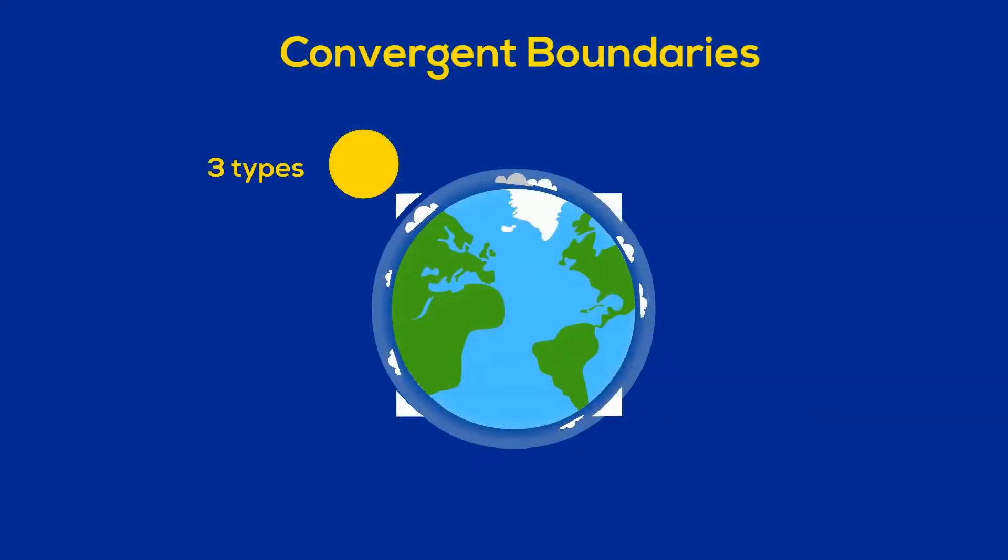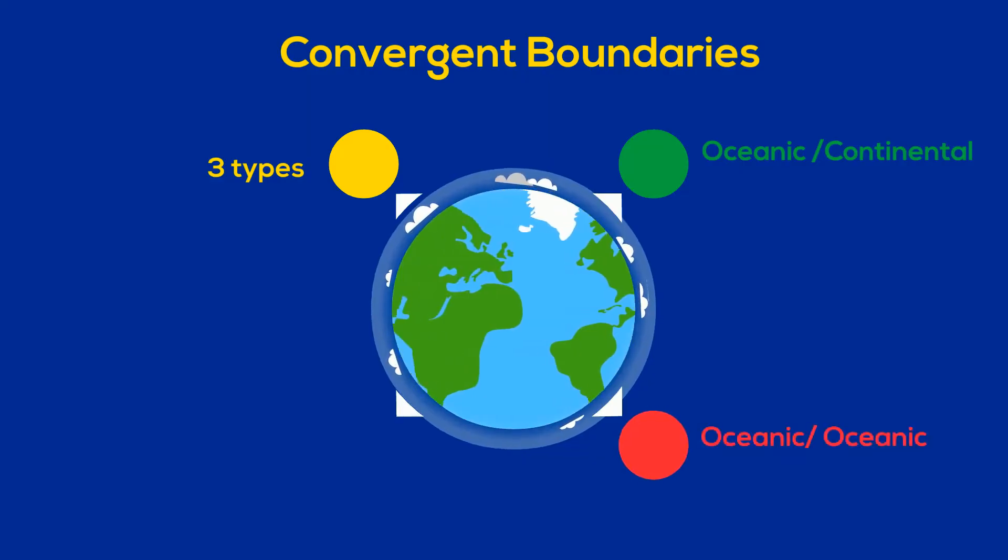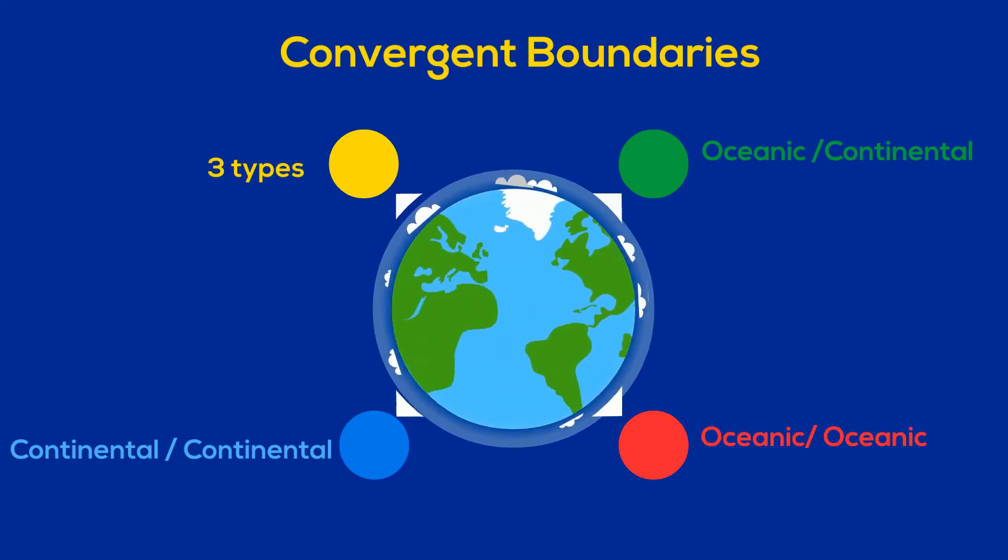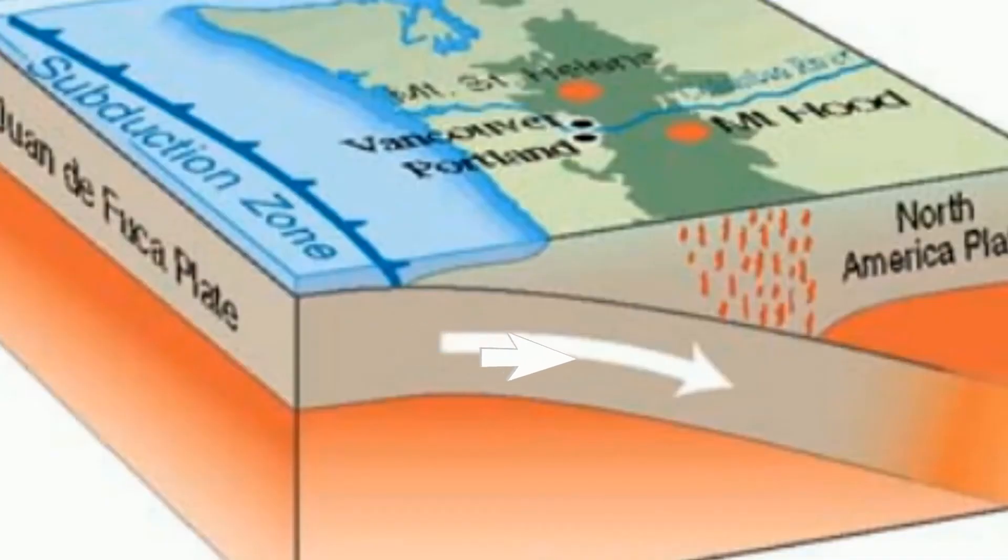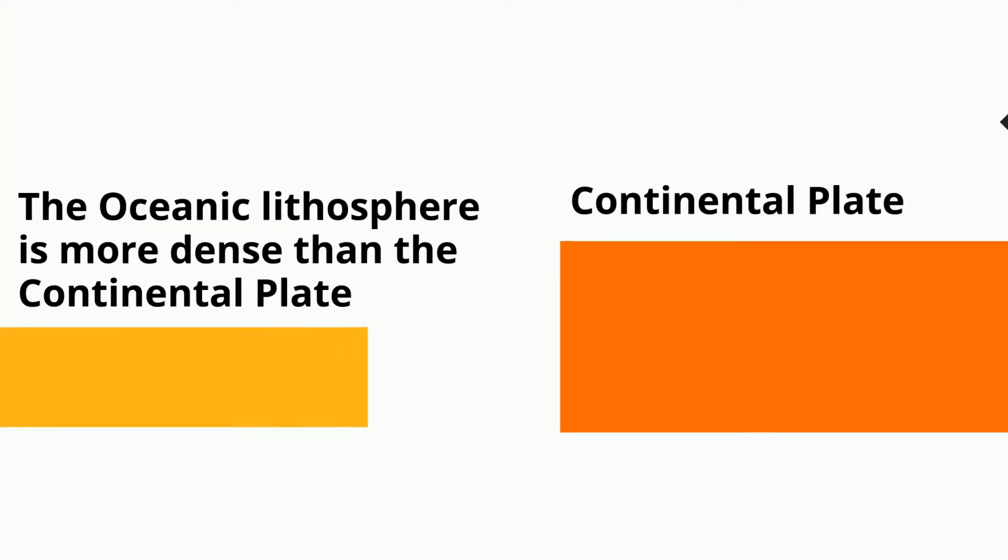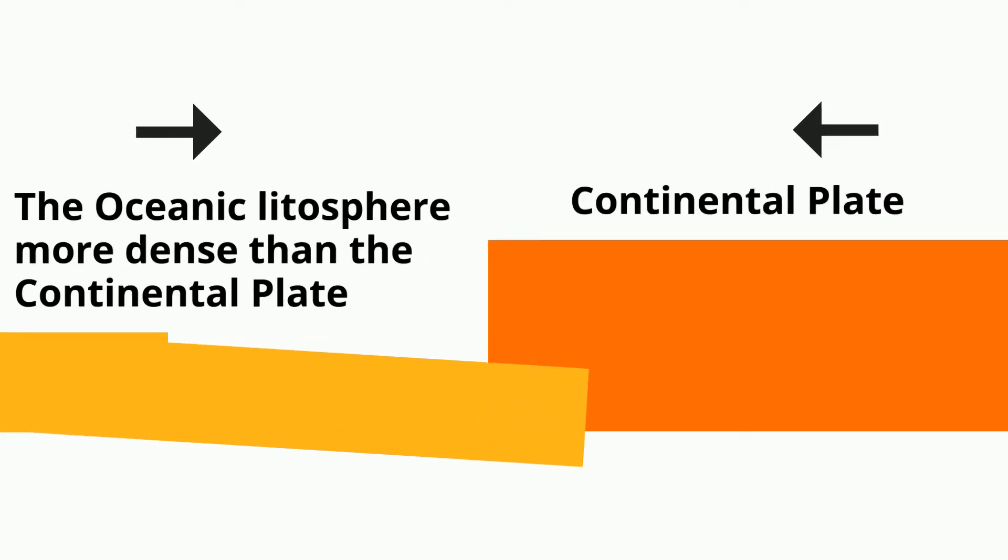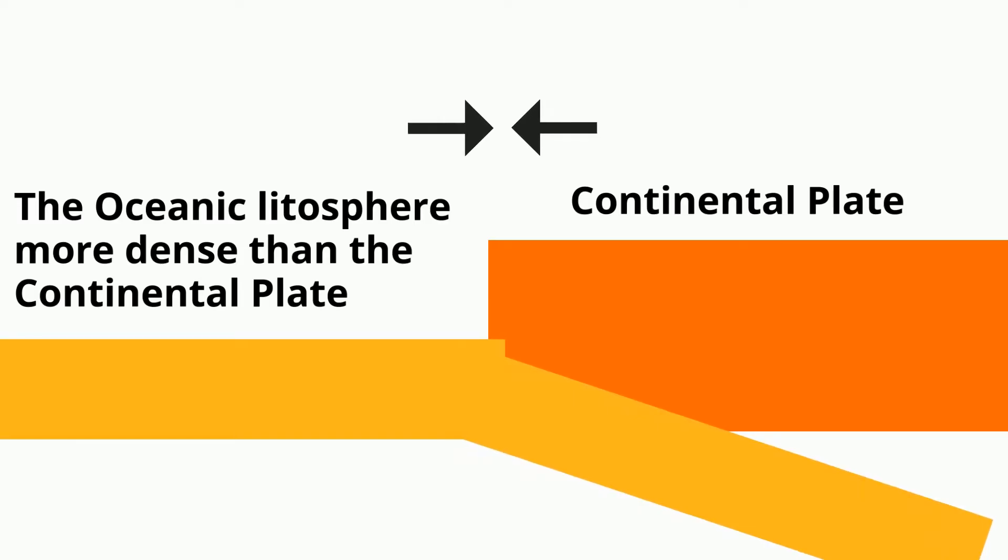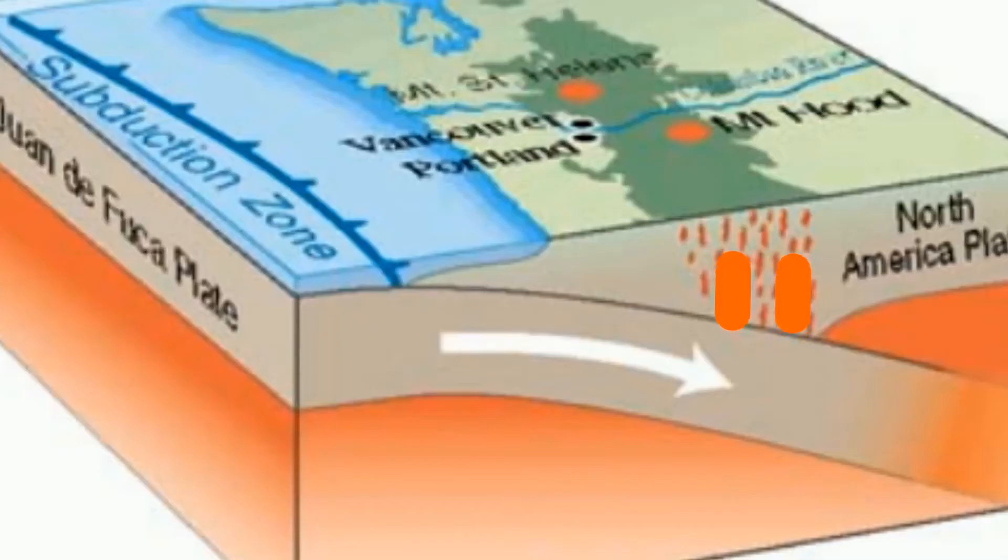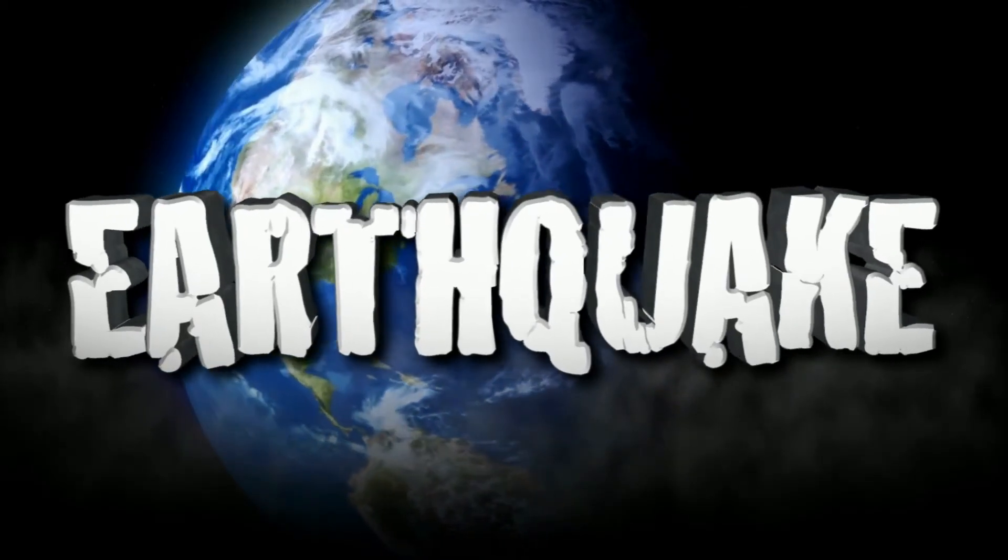There are three major types of convergent boundaries: oceanic and continental lithosphere, oceanic and oceanic lithosphere, and continental and continental lithosphere. Oceanic and continental convergent boundaries occur when oceanic crust subducts underneath the continental crust. The oceanic lithosphere has a greater density than the continental lithosphere and as it collides with the continental crust, it subducts underneath. As it sinks, magma is formed and begins to rise to the surface and may form volcanic mountains. Earthquakes may also occur and deep trenches may be formed.